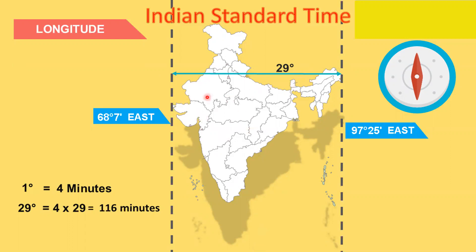It is very difficult to follow two different times in the same country. See here — Arunachal Pradesh, the easternmost state of India, gets sunlight in the morning, while it still remains dark in the westernmost state, Gujarat. Yet both of these states have the same time.